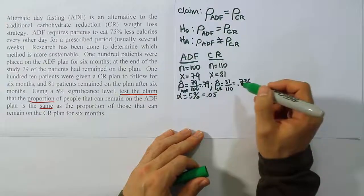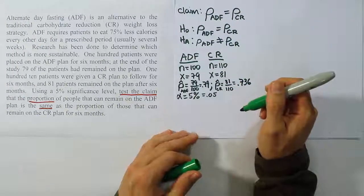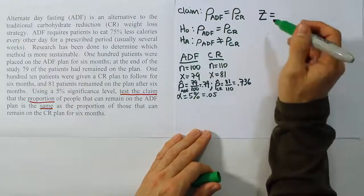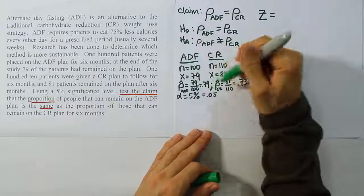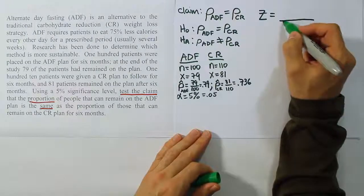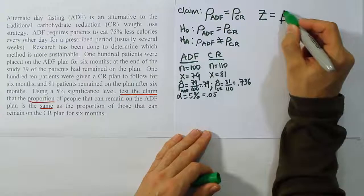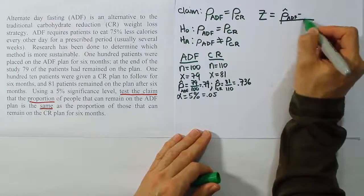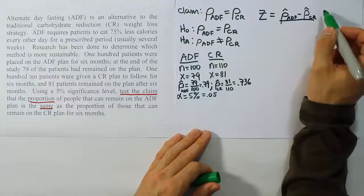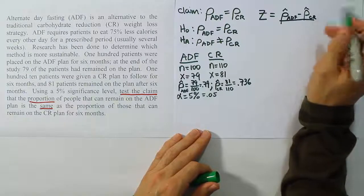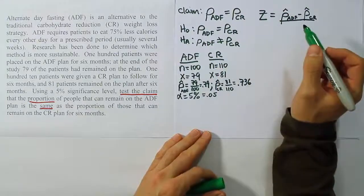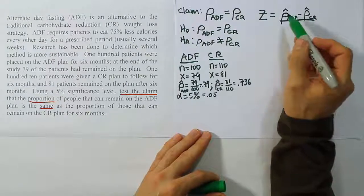Now at that point, what we want to do is take those values and the rest of the data and plug it into our test stat formula. The test stat formula officially is a z-test statistic, because we're going to approximate the distribution of the differences of the sample proportions by a z-distribution. The formula starts out with the top being, in our case, p-hat for ADF minus p-hat for the CR plan.